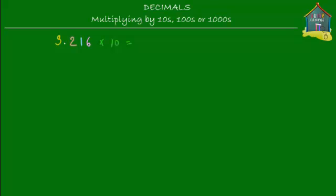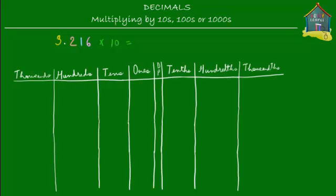Let me take a place value table and show you how we actually do multiplication. We're going to put the number 3.216 in this table. I put 3 here because 3 is in the ones place. Then I have my decimal point — dp. Then 2 is in the tenths place, 1 is in the hundredths place, and 6 is in the thousandths place — the third place after the decimal point.